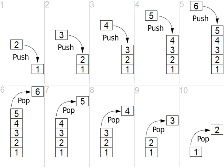Considered as a linear data structure, or more abstractly a sequential collection, the push and pop operations occur only at one end of the structure, referred to as the top of the stack. This makes it possible to implement a stack as a singly linked list and a pointer to the top element.